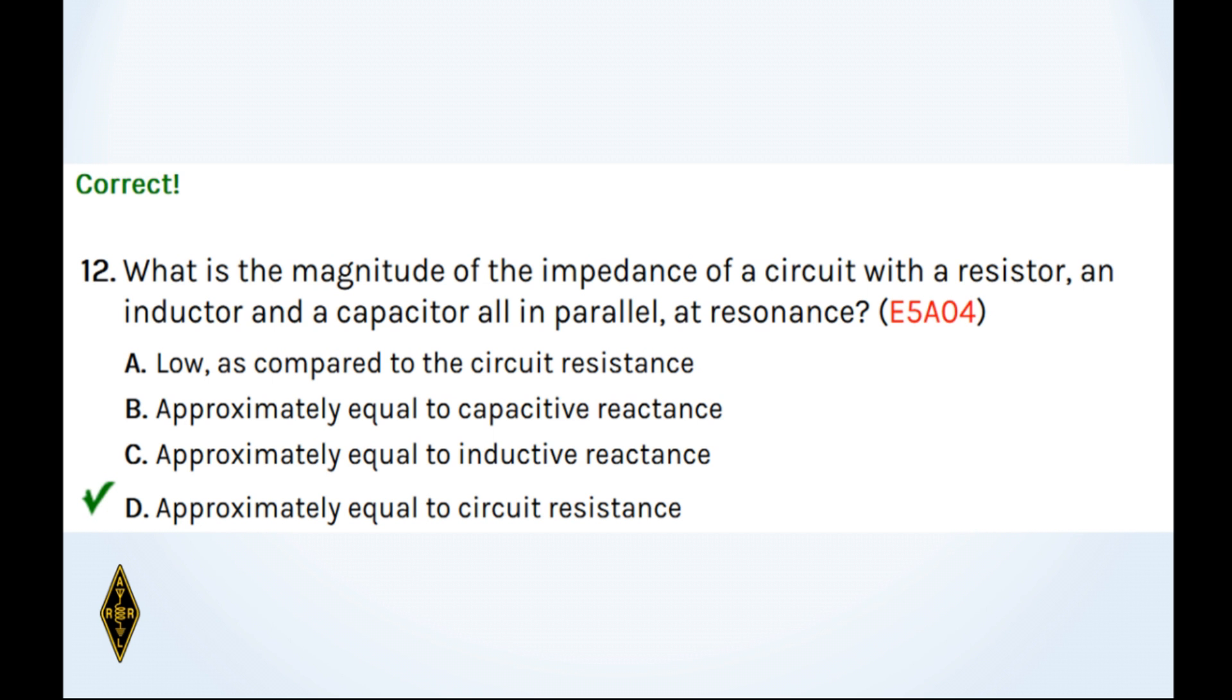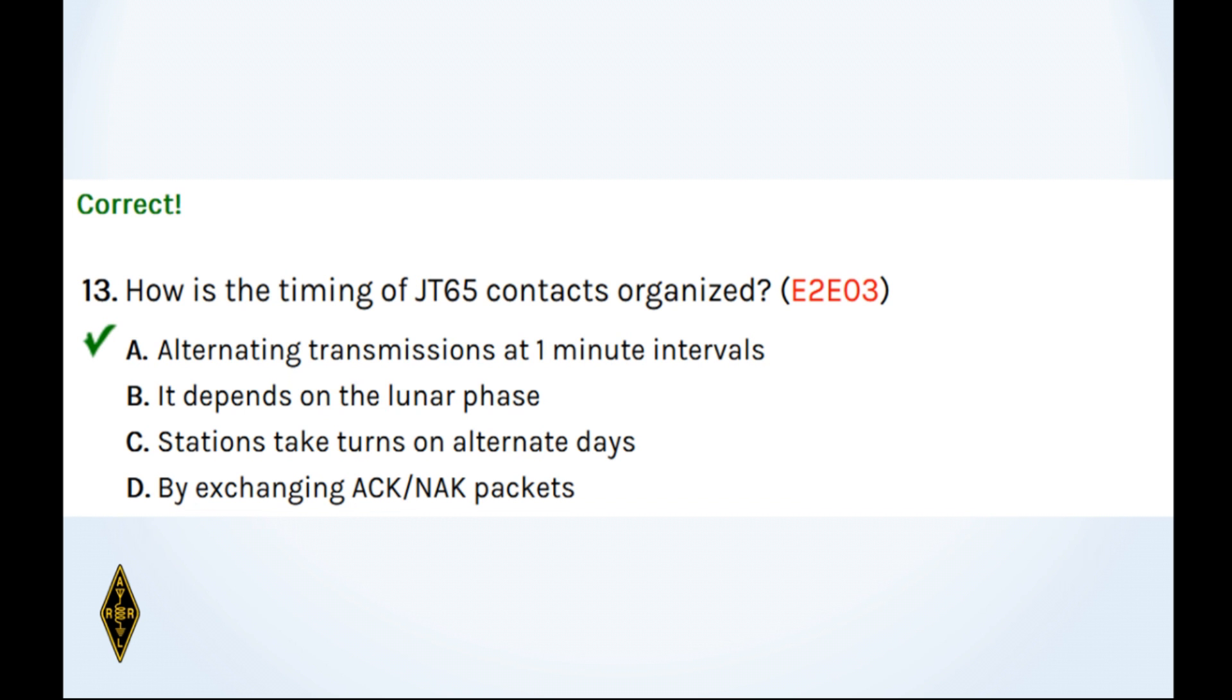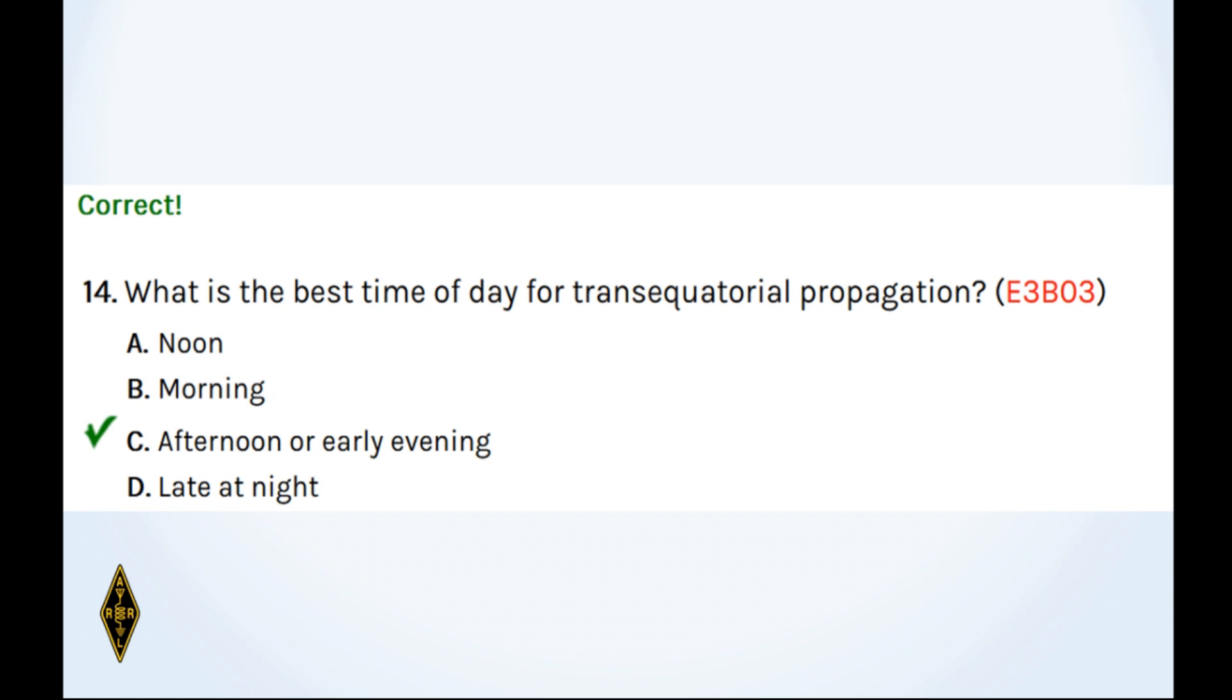And how is the timing of JT65 contacts organized? JT65 is the Earth, Moon, Earth. That's what was originally developed for. Alternating transmissions at one-minute intervals. 13A. And what is the best time of day for transequatorial propagation? That's in the afternoon or early evening. When we can have contacts from here down to South America via TE, transequatorial. And 15, what type of logic defines 1 as a high voltage? That's positive logic.